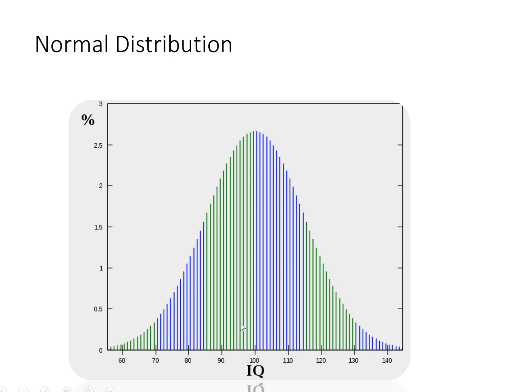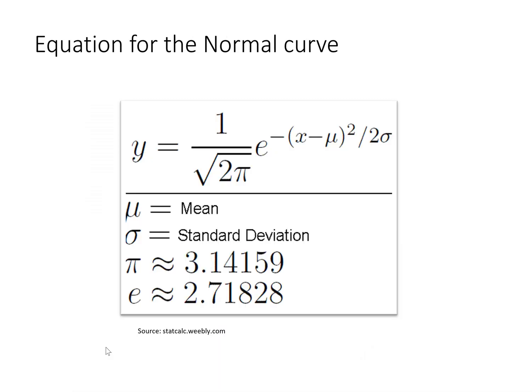We can see that the characteristics are illustrated here. We have a symmetrical and unimodal distribution where the mean, median, and mode are likely very equal. It doesn't do a great job of demonstrating the asymptotic nature of the tails, but that's more in theory than in practice. For the most part, what we see here is a beautiful normal distribution.